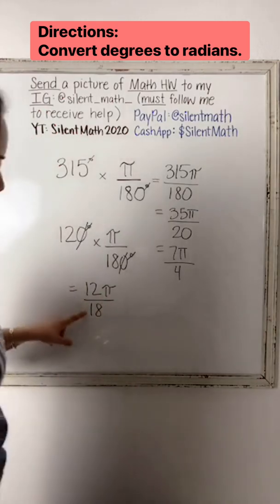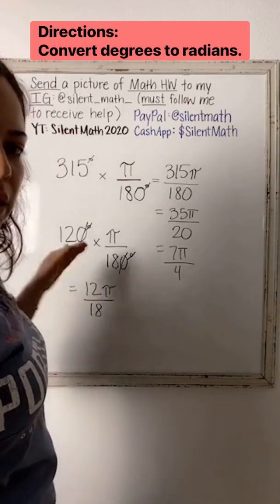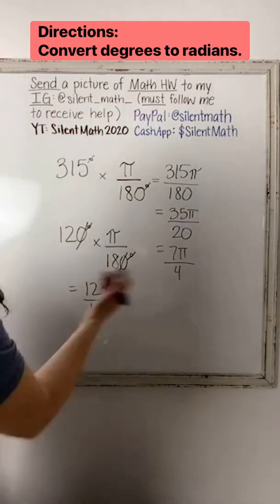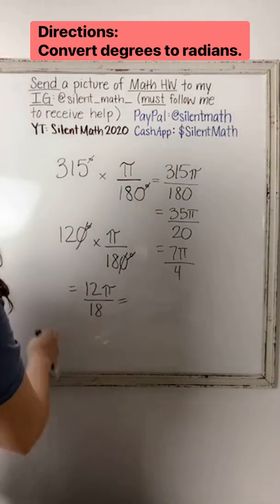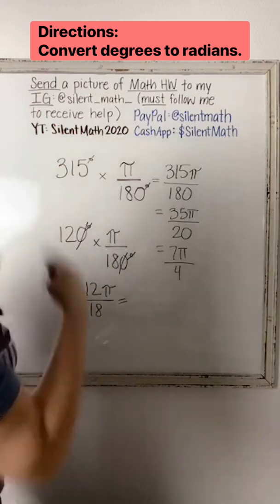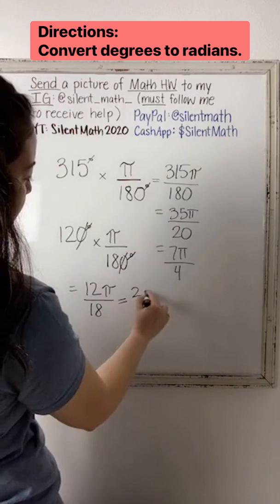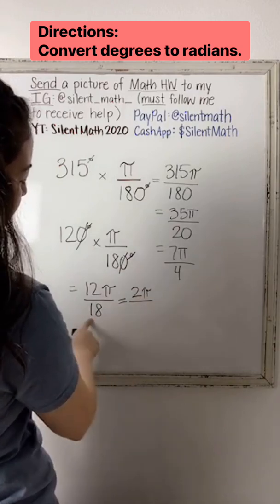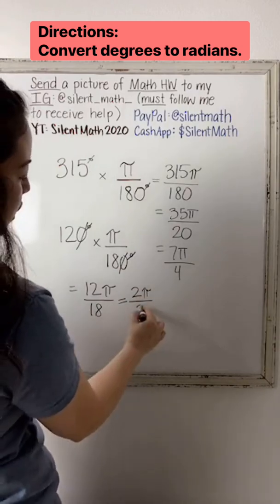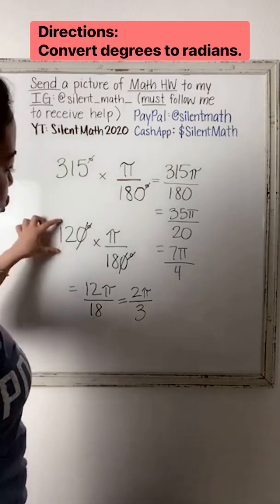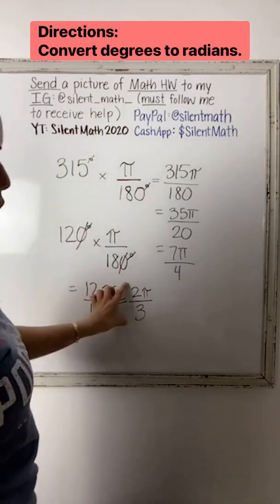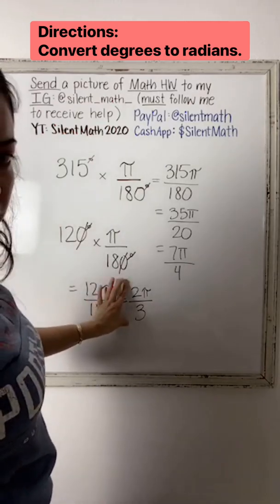12 and 18 share a common factor of 6. So we're going to keep simplifying until we have nothing else. So 12 divided by 6 is 2, and then 18 divided by 6 is 3. So 120 degrees is equivalent to 2 pi over 3 in radians.